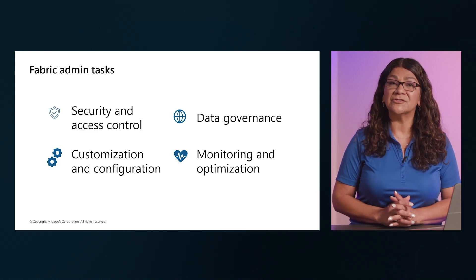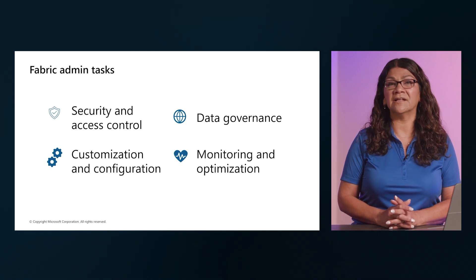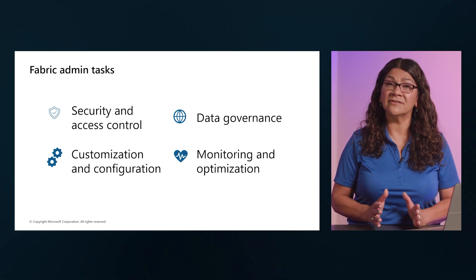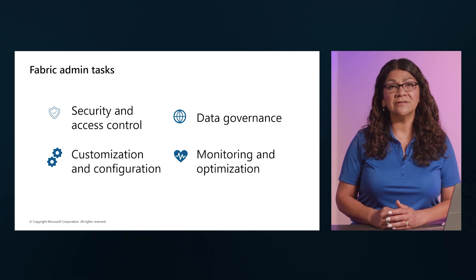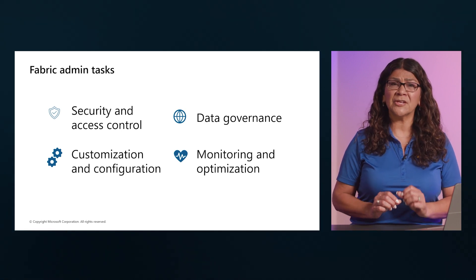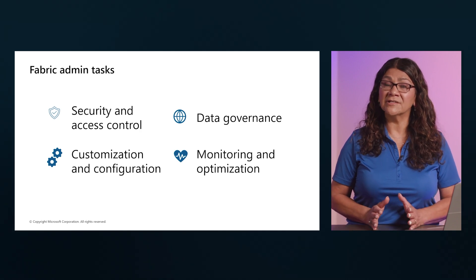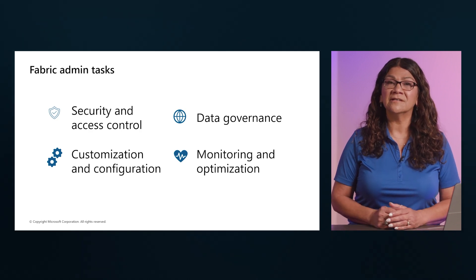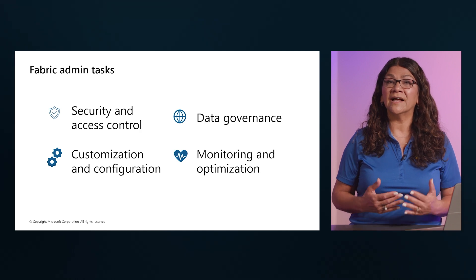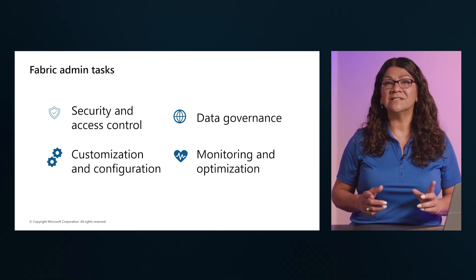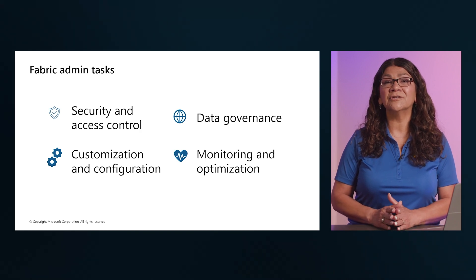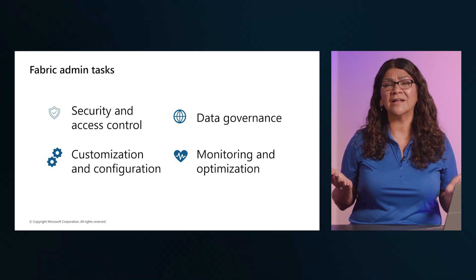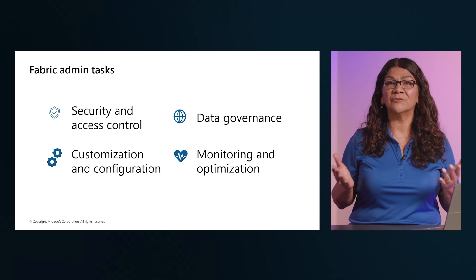Effective Fabric administration requires a solid understanding of data governance principles. You should know how to secure inbound and outbound connectivity in your tenant and how to monitor usage and performance metrics. You should also know how to apply data governance policies to ensure data within your tenant is only accessible to authorized users. Fabric administration also involves customizing and configuring the platform, including configuring private links to secure your tenant, defining data classification policies, and adjusting the look and feel of reports and dashboards.